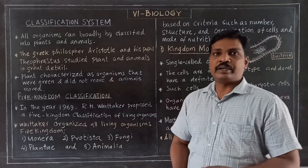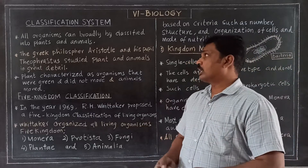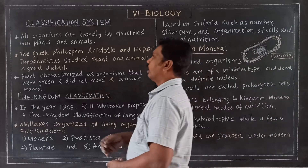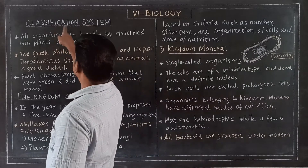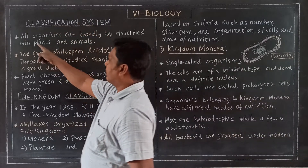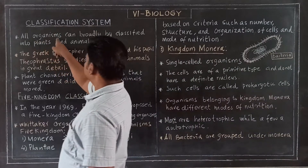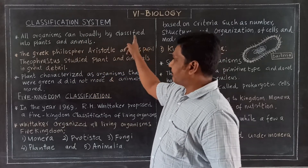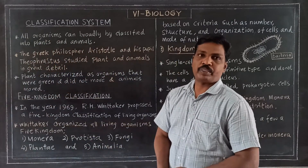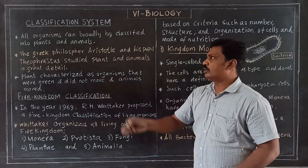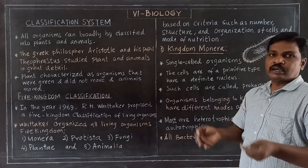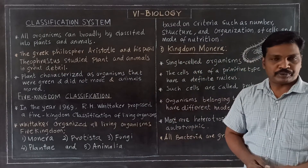Today we are going to discuss the classification system. Classification can be performed on all organisms. All living organisms can be classified into plants and animals.